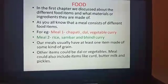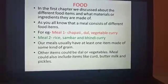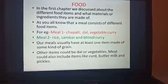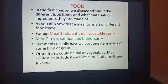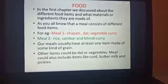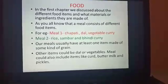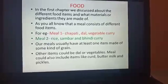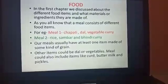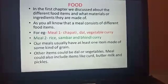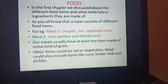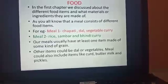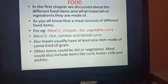As you all know, a meal consists of different food items. For example, meal 1 consists of chapati, dal, and vegetable curry. Another type of meal consists of rice, sambar and bindi curry. Our meals usually have at least one item made of some kind of grain — examples of grain are rice, wheat, jowar, bajra. Other items we take with the grain are dal or vegetables. Our meal could also include items like curd, buttermilk and pickles.